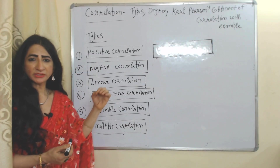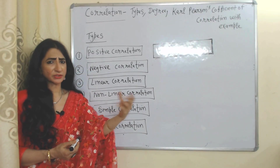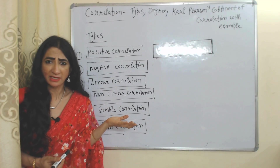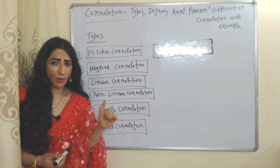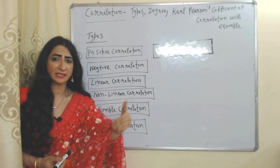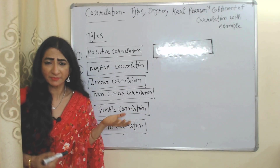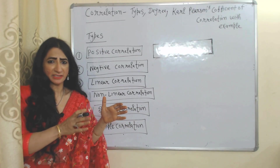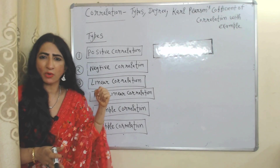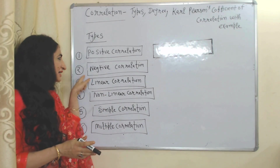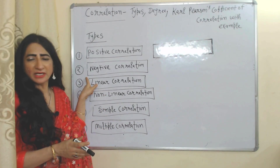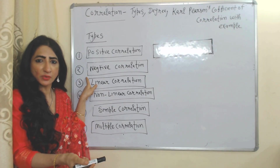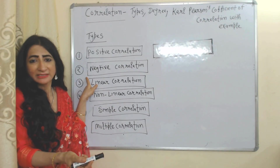Types of correlation are mainly divided into six parts. Positive correlation shows the positive relationship between variables — that means if one variable increases then the other also increases. For example, income and consumption: if income increases, consumption also increases.